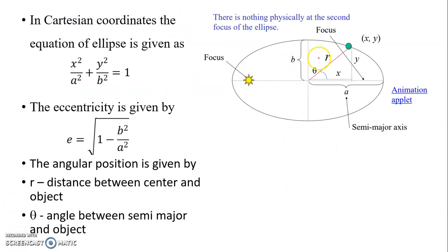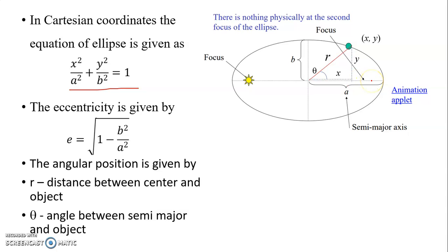The location of the object in an elliptical orbit is represented by this equation in Cartesian coordinates, where X represents the X-axis and Y represents the Y-axis from the semi-major axis. The eccentricity — which describes the shape of the ellipse — is given by this equation: one minus B squared over A squared.